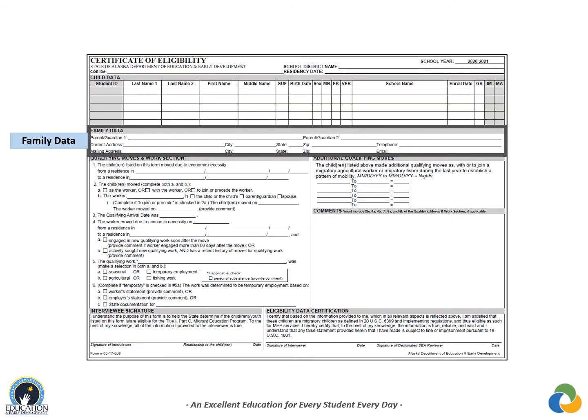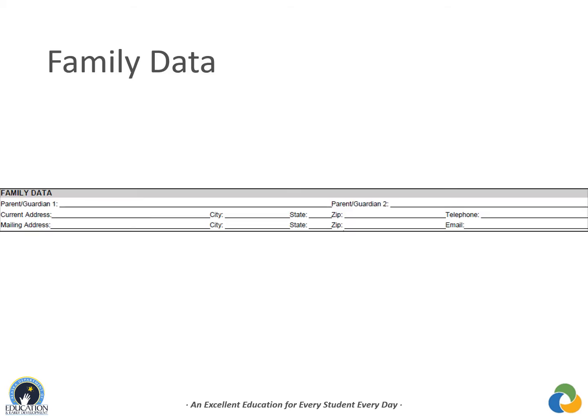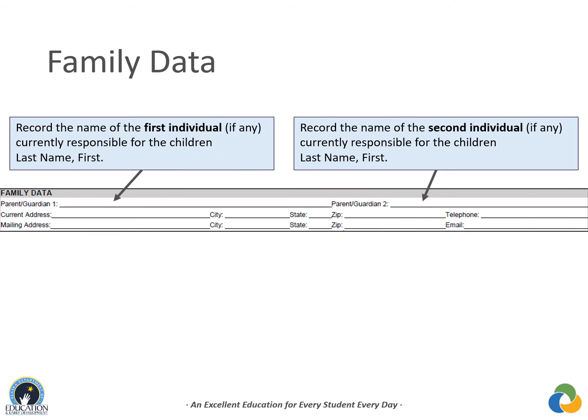The Family Data section records contact information for the children's primary household. Parent/Guardian 1 is the name of the individual currently responsible for the children; Parent/Guardian 2 is the second individual, if any. Legal names must be listed in order of last name, then first name. The term Parent/Guardian on the COE can mean a legal guardian or other person standing in place of the parent, including a grandparent or stepparent with whom the children live.